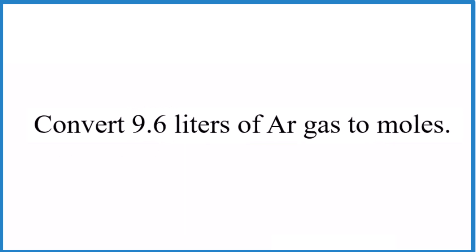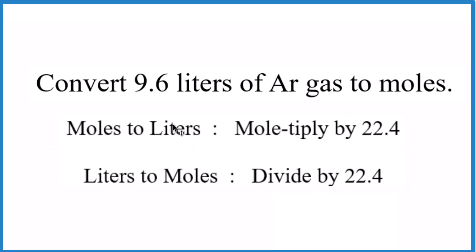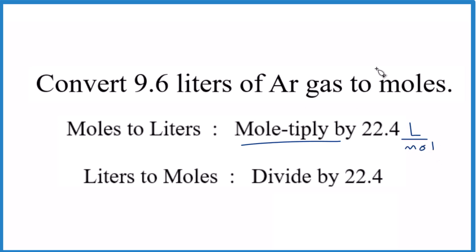One way to remember this is to think of it this way, this little mnemonic here. If you're going from moles to liters, you multiply by 22.4 liters per mole. But since we're going from liters to moles here, we just do the opposite. We divide by 22.4 liters per mole. So if you can remember moles to liters, you multiply by 22.4. Just do the opposite for liters to moles here.